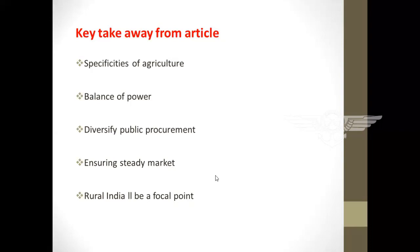Almost 86 percent of farmers are small and marginal farmers, and they all bring their harvest to market at the same time. Since demand for food crops is typically price inelastic, a bumper crop results in a drastic fall in price, and during a drought the price rises. For poor consumers, this is a threat as they are unable to pay high prices for food crops that were earlier cheaper.